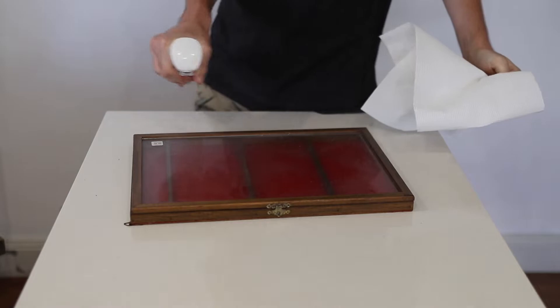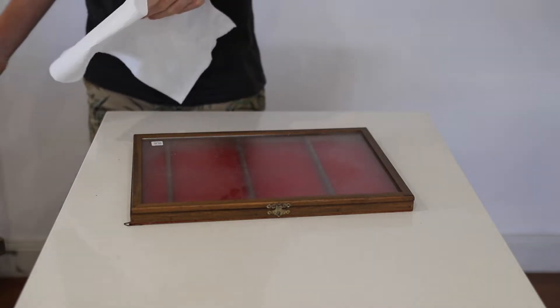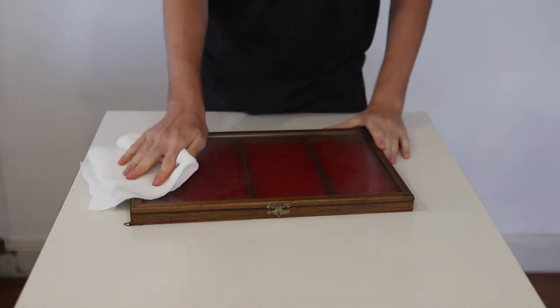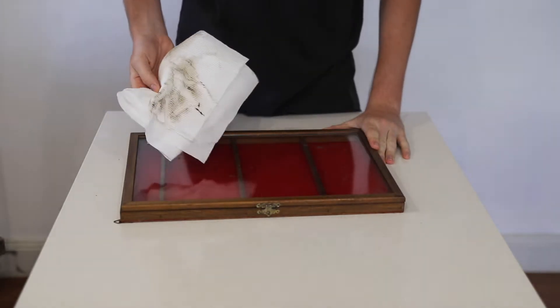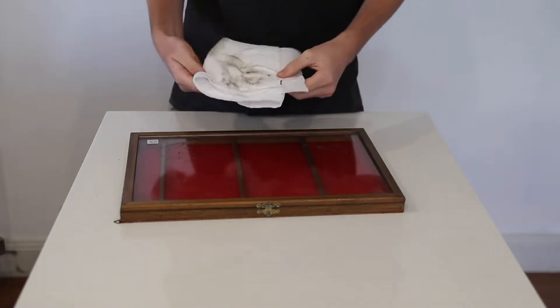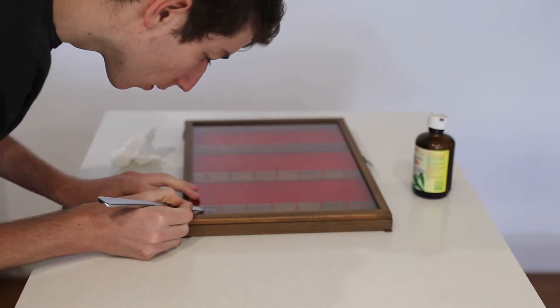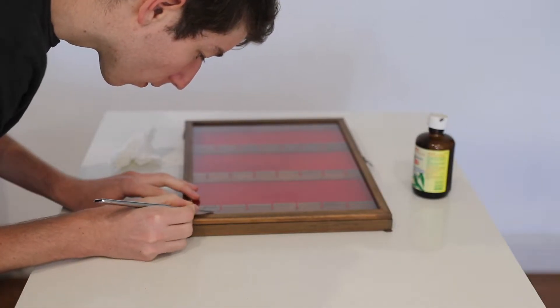So first step obviously was to give it a bit of a clean down. It was quite dirty and dusty from being out of use for however long. And then try and remove that Vinny's label with some eucalyptus oil and the backside of a knife.